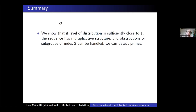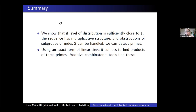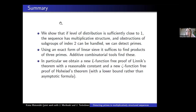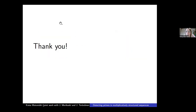To summarize: if we have a sequence with level of distribution sufficiently close to 1 and some multiplicative structure, and we can deal with obstructions from subgroups of index 2, then we can detect primes. We use the exact form of the linear sieve to show it suffices to find products of 3 primes, and then use additive combinatorial tools to find products of 3 primes in the set. In particular, we obtain a new L-function-free proof of Linnik's theorem with a reasonable constant, and a new zeta-function-free proof of a theorem on primes in short intervals, obtaining a lower bound rather than asymptotic formula for the number of primes. Thank you.